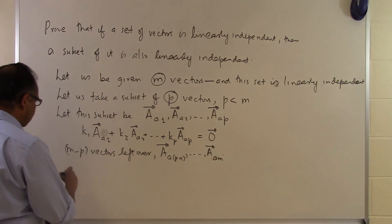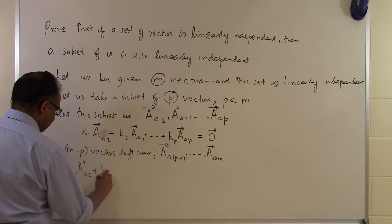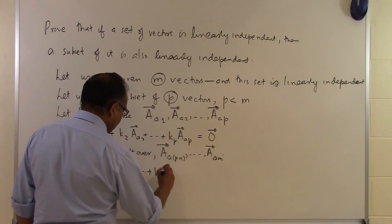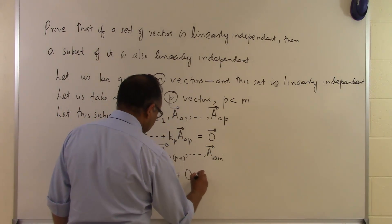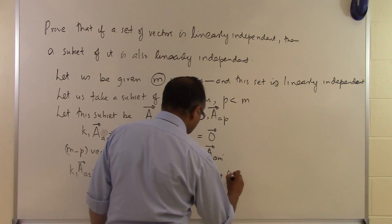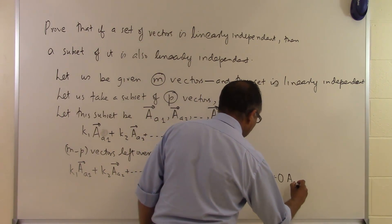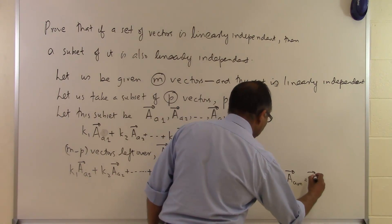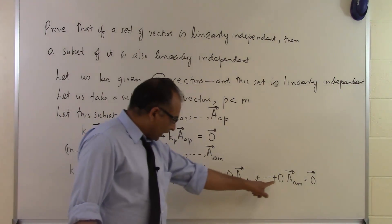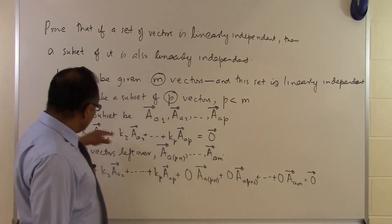What we can do is write: k1·a1 + k2·a2 + ... + kp·ap + 0·ap+1 + 0·ap+2 + ... + 0·am = 0. We are adding zero times each of the remaining m minus p vectors, so this expression is the same as the original linear combination set equal to zero.